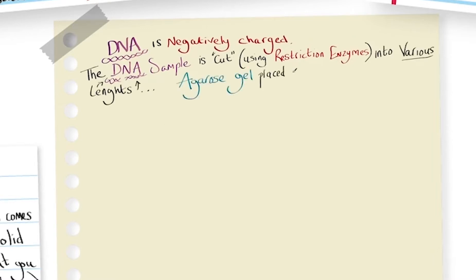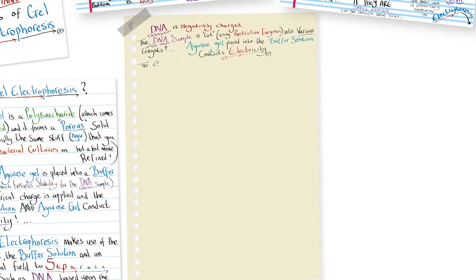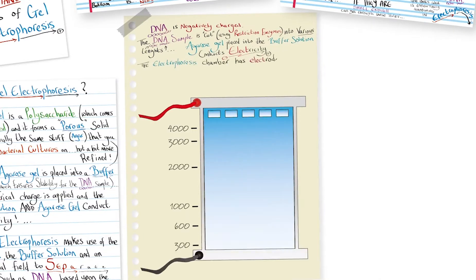Agarose gel placed into the buffer solution conducts electricity. The electrophoresis chamber has electrodes at each end, negative at the end where DNA is loaded into the gel, and at the other end we have the positive electrode.